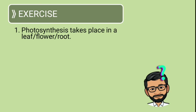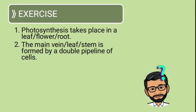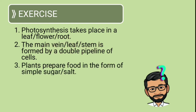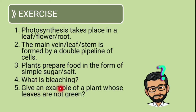Here are some questions you can try at home: 1) Photosynthesis takes place in which part — leaf, flower, or root? 2) The main vein is found in which part — vein, leaf, or stem? 3) Plants prepare food in the form of simple sugar or salt? 4) What is bleaching? 5) Give an example of a plant whose leaves are not green. These questions are quite easy because we have already discussed these topics in our session.